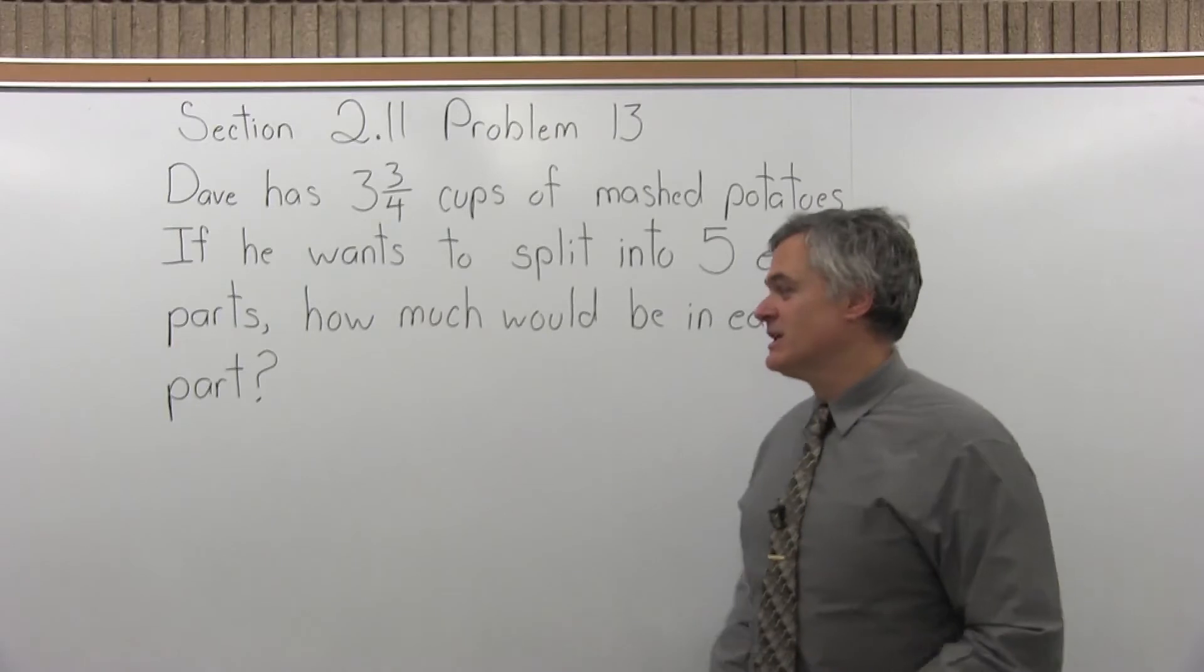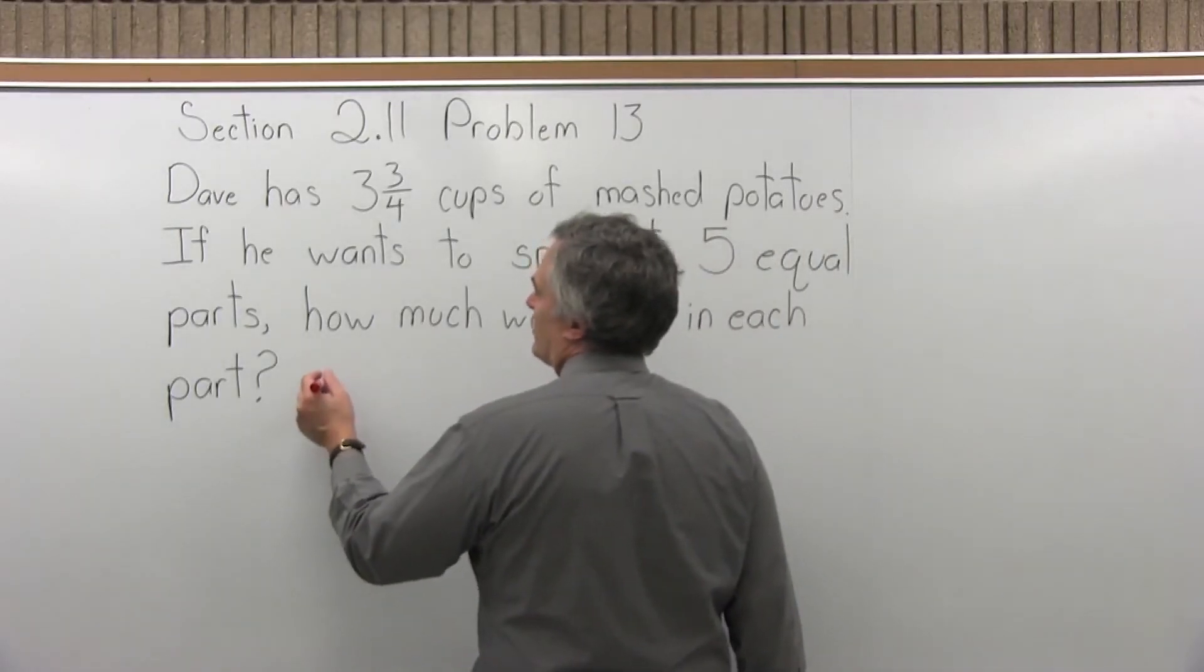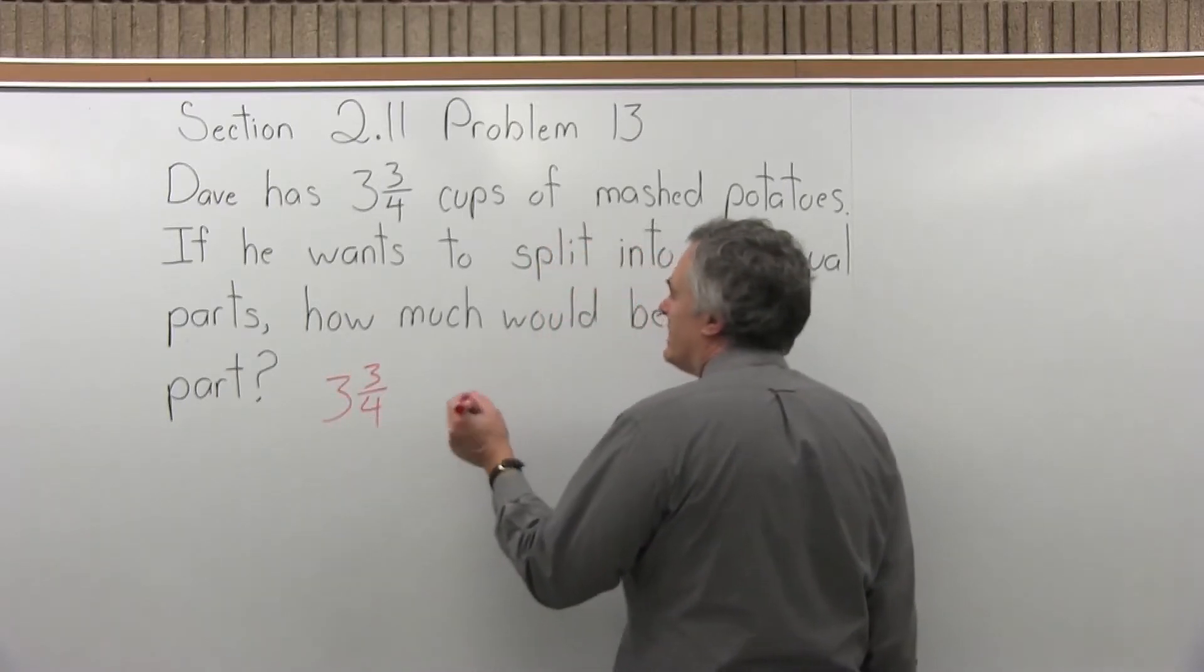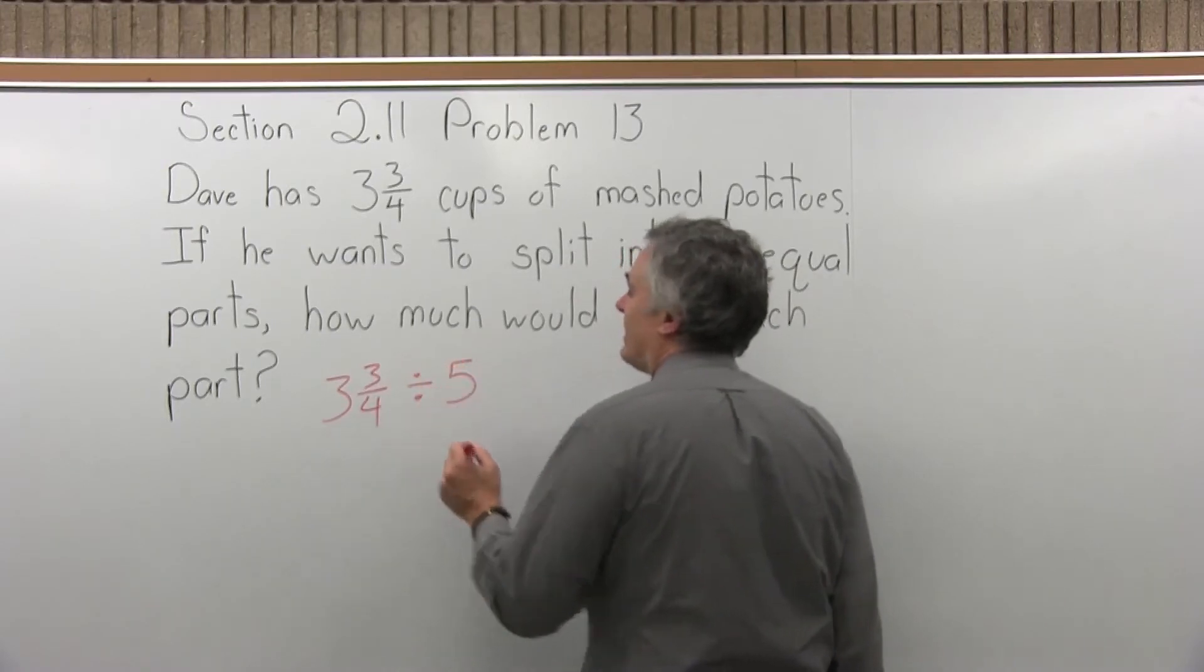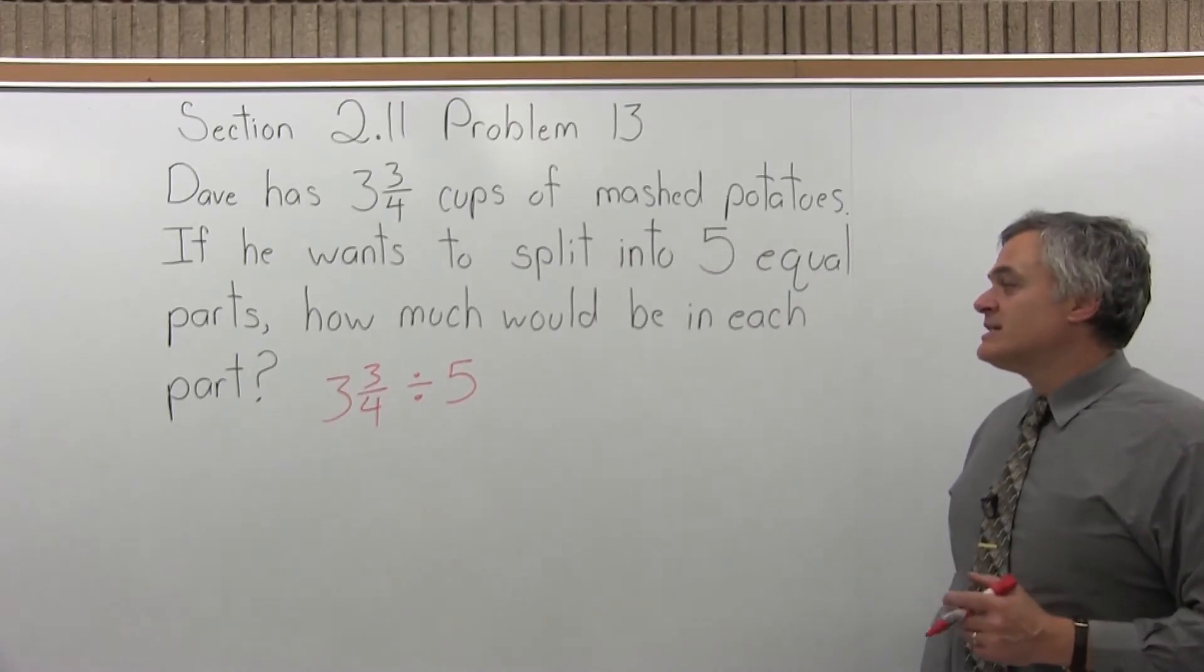He probably has five people to feed, most likely, is what he's doing. Maybe these are leftovers. So he has three and three quarter cups of mashed potatoes, and he wants to split it into five parts. So if we divide by five, that will split it into five parts. So that's the math we have to do.